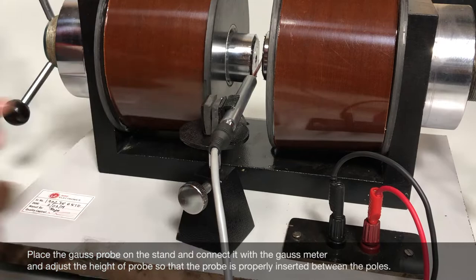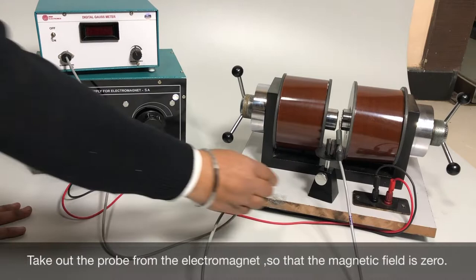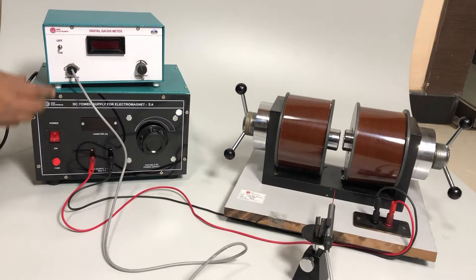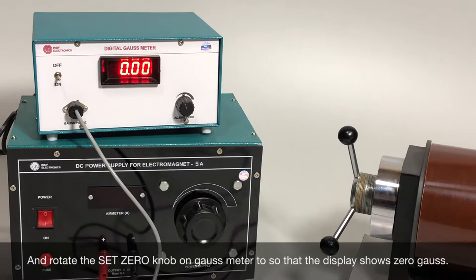Take out the probe from the electromagnet so that the magnetic field is zero. Now switch on the digital gauss meter and rotate the set zero knob on gauss meter so that the display shows zero gauss.